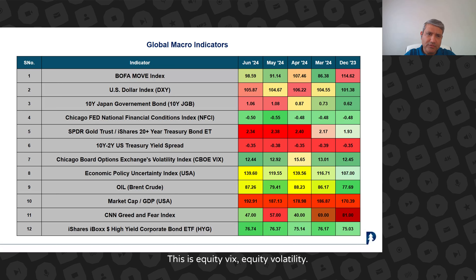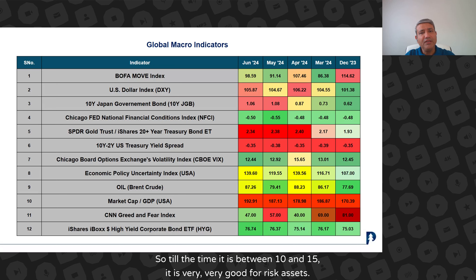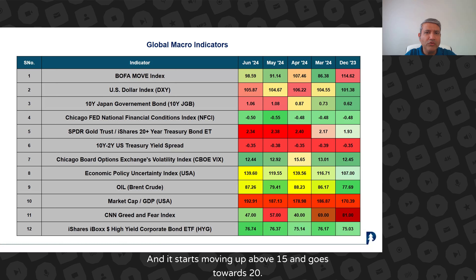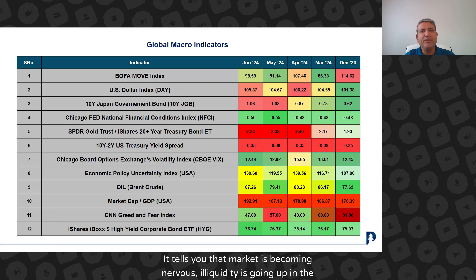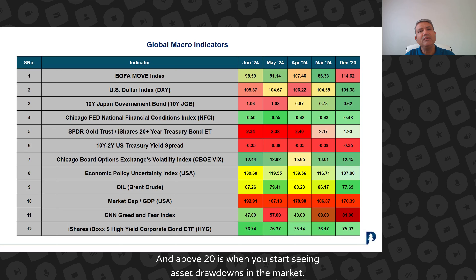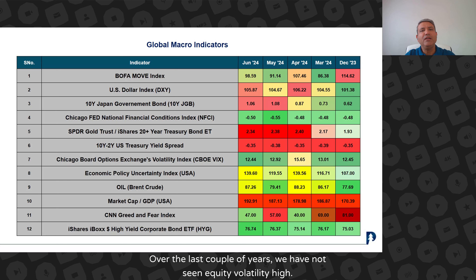The seventh is CBOE VIX — equity volatility. You will see that it is green. Till the time it is between 10 and 15, it is very good for risk assets. When it starts moving above 15 and goes towards 20, it tells you that the market is becoming nervous — illiquidity is going up and the cost of hedging is rising. Above 20 is when you start seeing massive drawdowns in the market. Over the last couple of years, we have not seen equity volatility high. It has been very benign.